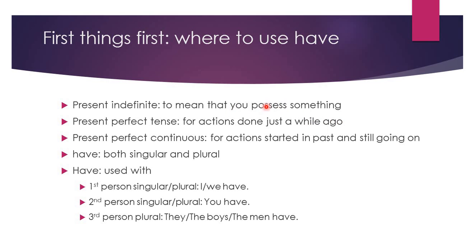In the simple present tense, 'have' and 'has' are used as the main verb — 'I have,' 'he has.' But in the present perfect tense, 'have' and 'has' are used as auxiliary verbs, as helping verbs. Again, in the present perfect continuous tense, we use these verbs as helping verbs, and we use this tense to talk about actions that started in the past and are still going on. 'Have' is both singular and plural — it is used with the first person singular and plural, the second person singular and plural, and the third person plural.